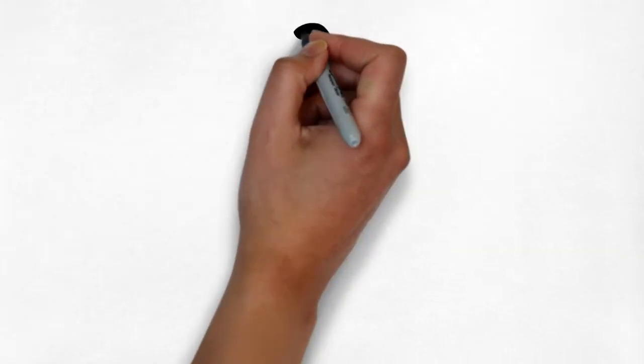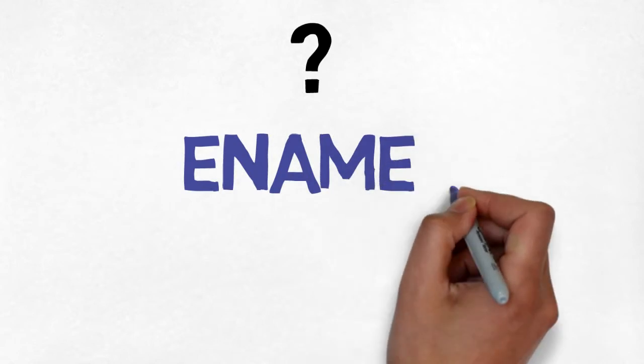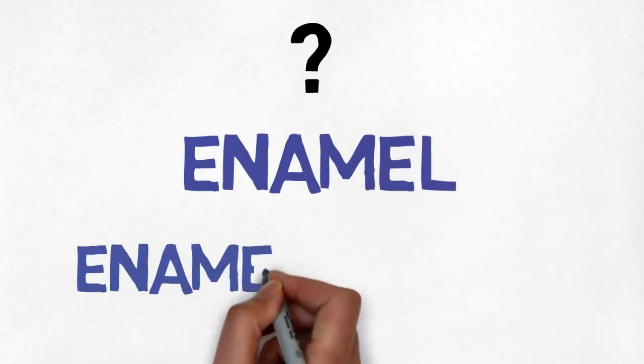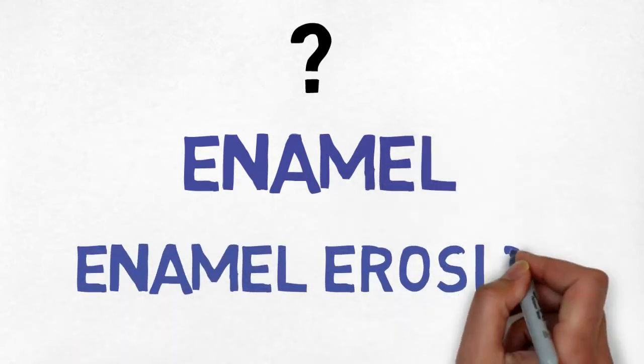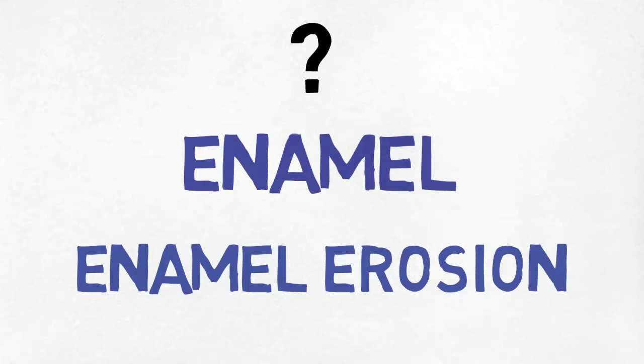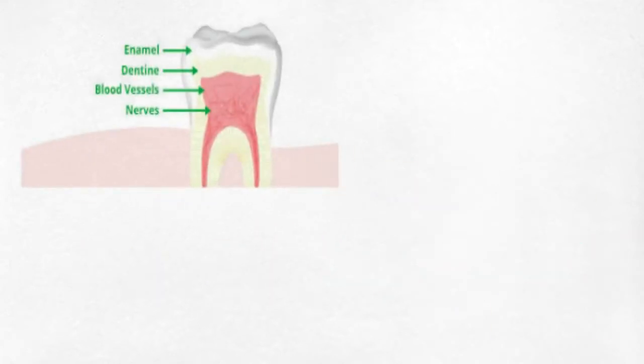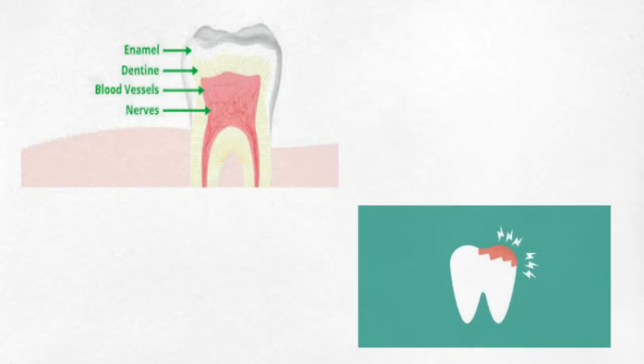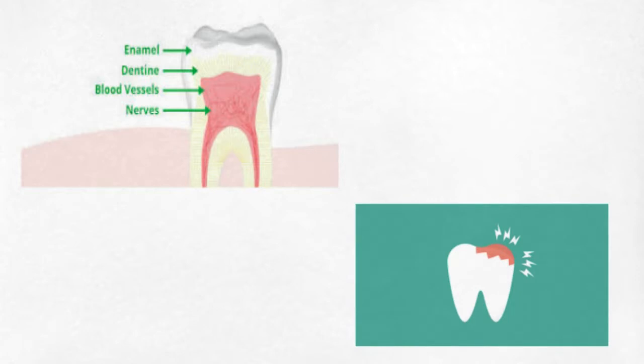So what is enamel and enamel erosion? Enamel is the thin outer covering of the tooth. This tough shell is considered to be the hardest tissue in our body. Enamel covers the crown, which is the tooth's visible part outside the gum. It is translucent in nature.